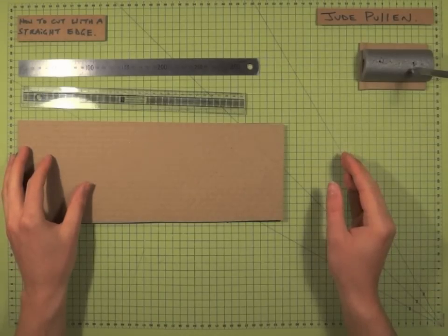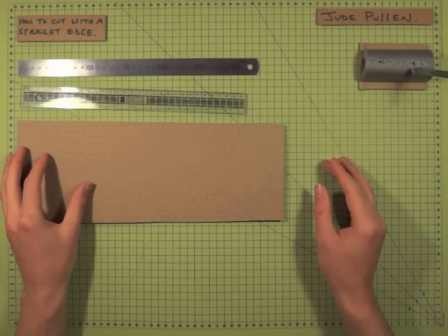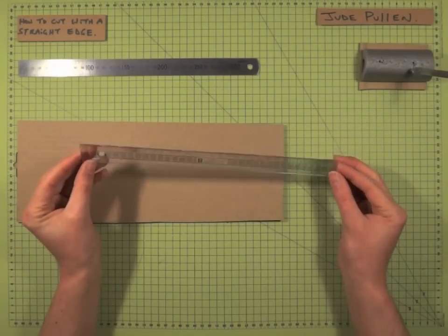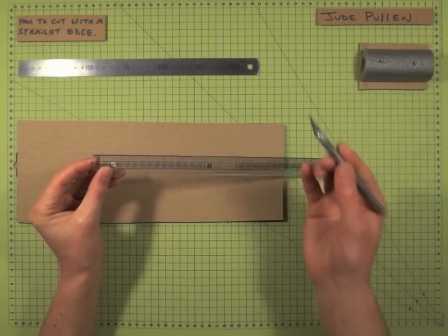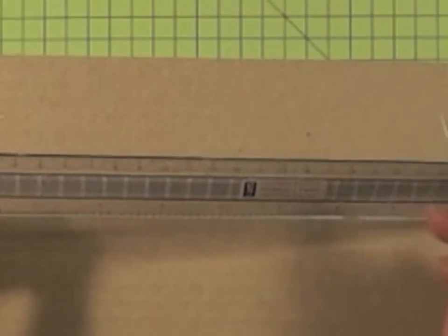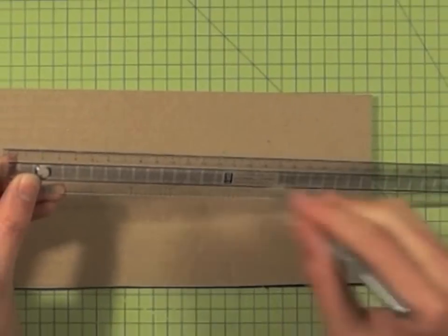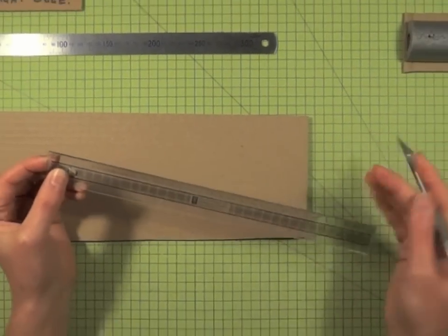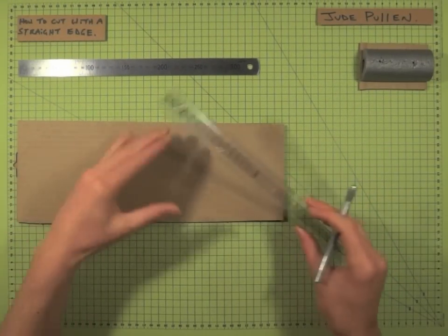If you're using a straight edge or ruler for cutting, one thing to remember is that if you use a plastic ruler and the blade is very sharp, it can actually dig out little chunks over time. This translates into the piece, so if you've got a wobbly edge here, you'll get a wobbly edge on your piece.